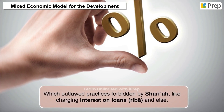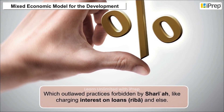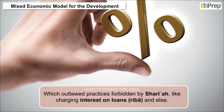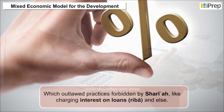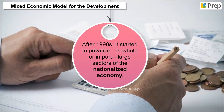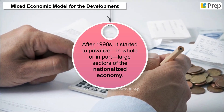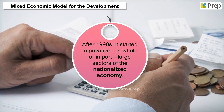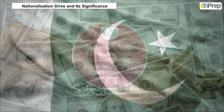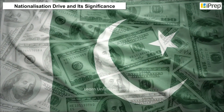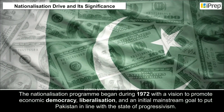Further changes were made during the 1980s when an Islamic economy was introduced, which outlawed practices forbidden by Sharia, such as charging interest on loans. However, after the 1990s, Pakistan started to privatize, in whole or in part, large sectors of the nationalized economy.